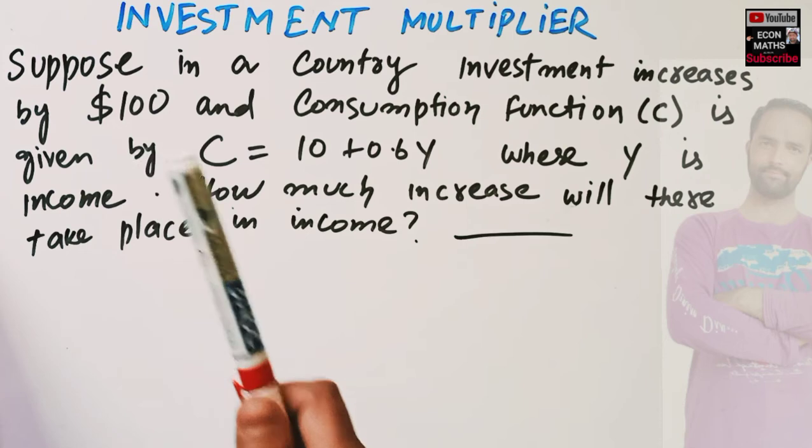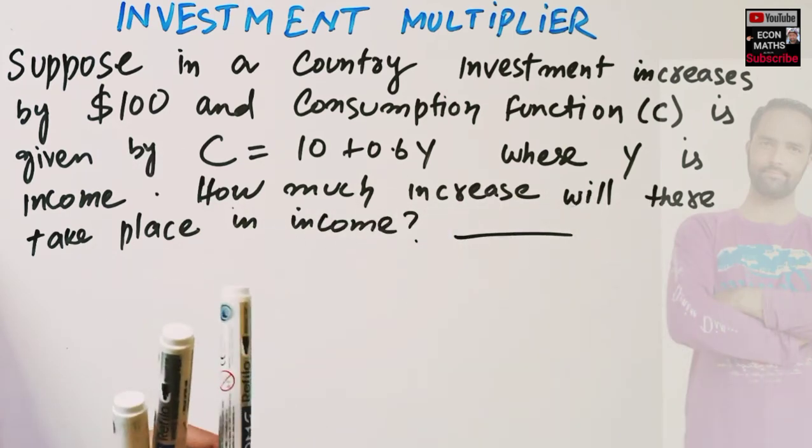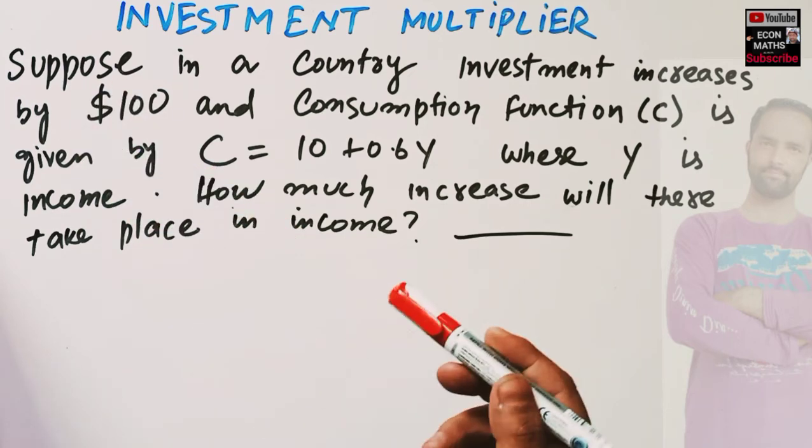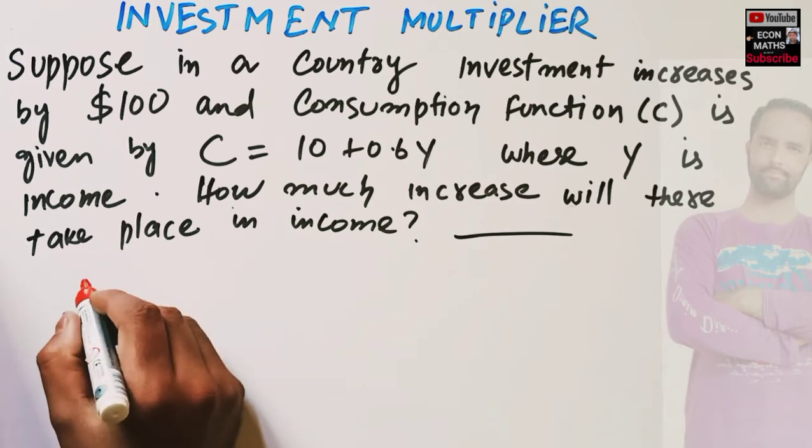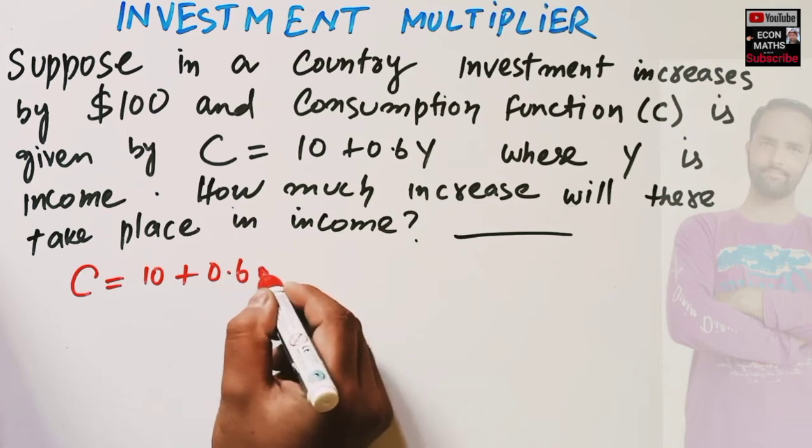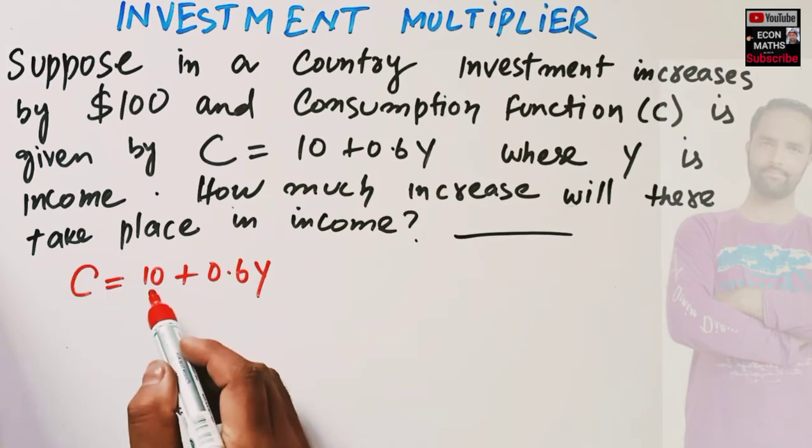How much increase will there take place in income? We need to find out if investment increases by $100, how much increase will be there in income. So what we are being given: the consumption function is C = 10 + 0.6Y.